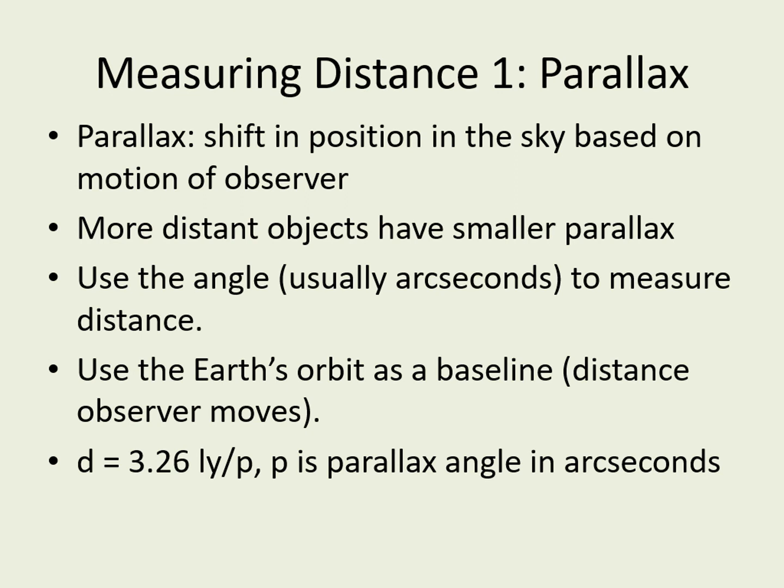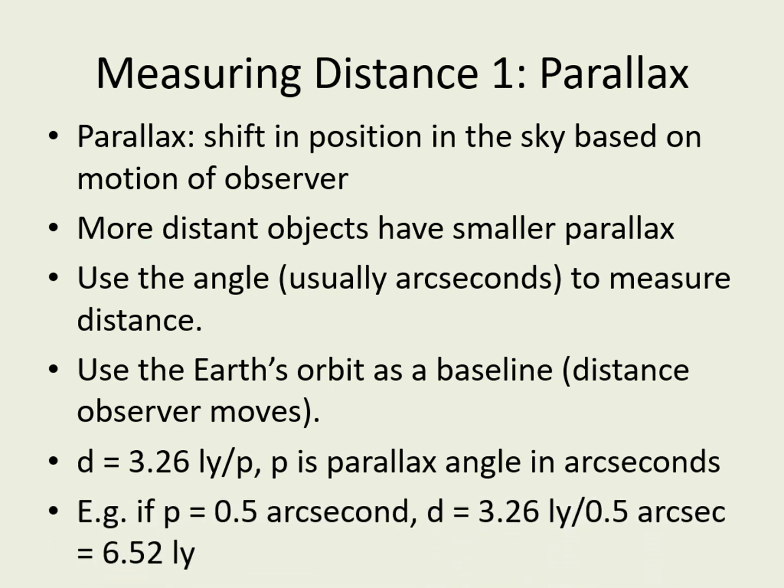D equals 3.26 light-years divided by P, the parallax angle measured in arc seconds. Notice that the smaller the angle P the star appears to move, the larger the distance. A star that has a parallax angle of one arc second would be 3.26 light-years away — closer than any star except the Sun. A star with a parallax of half an arc second would be 2 times 3.26, which equals 6.52 light-years away. The best parallax measurements can have an uncertainty as small as a few hundred-thousandths of an arc second, so parallax can be used to measure distances of a hundred thousand light-years away or more. By the way, if you've forgotten what an arc second is, just review the telescope section.